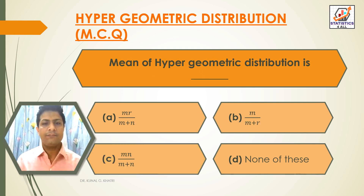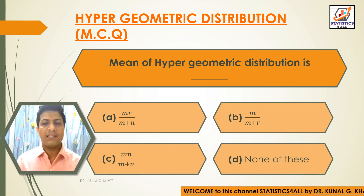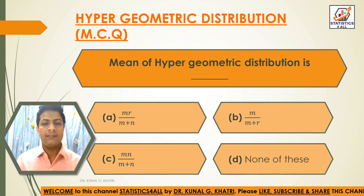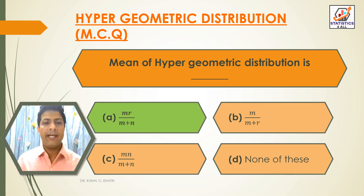Next question: Mean of Hypergeometric distribution is — Option A: mr/(m+n), Option B: mn/(m+r), Option C: mn/(m+n), Option D: None of these. The answer is Option A — mr divided by m plus n. Mean of Hypergeometric distribution is mr/(m+n).